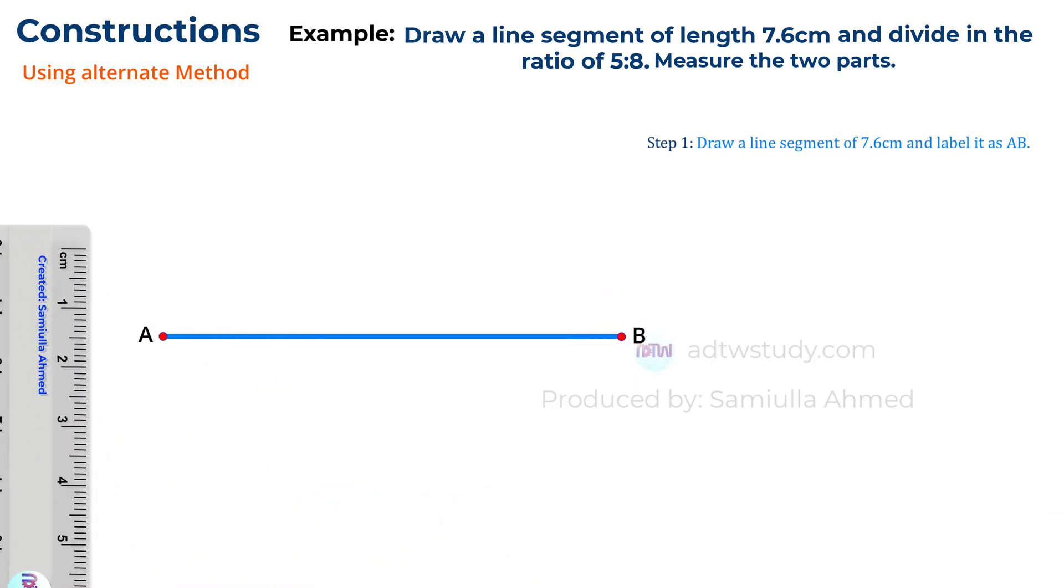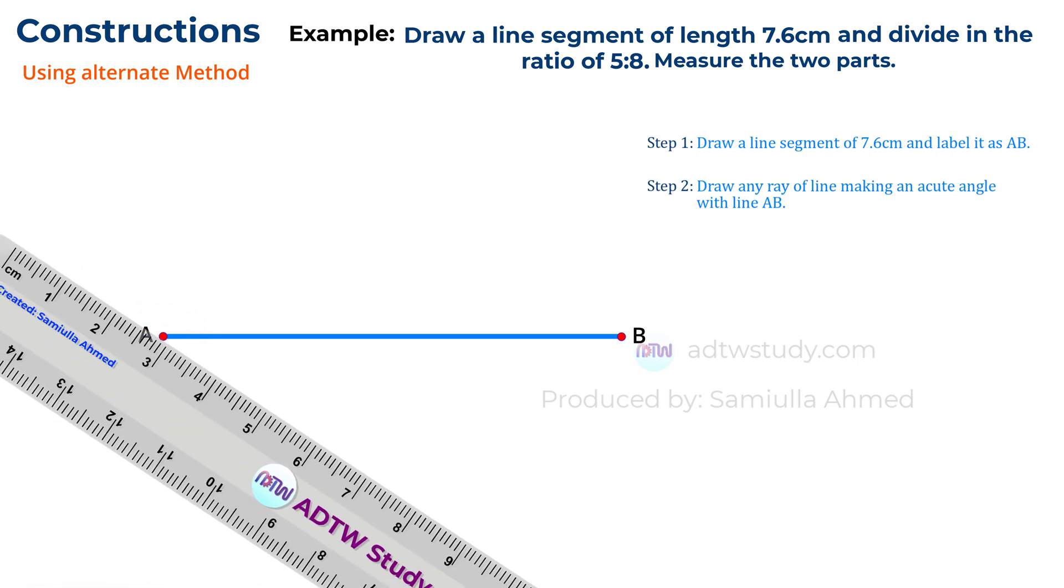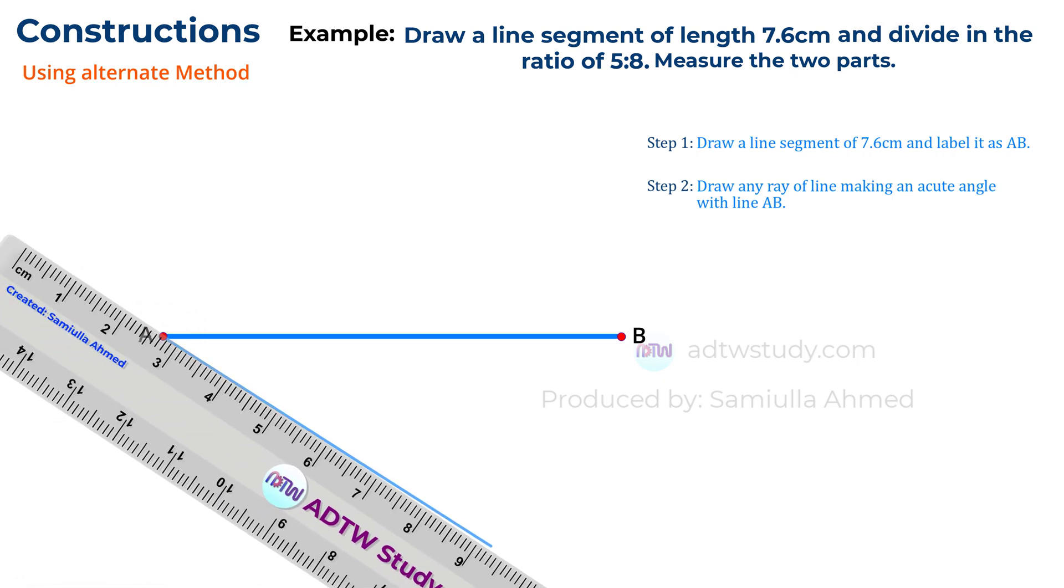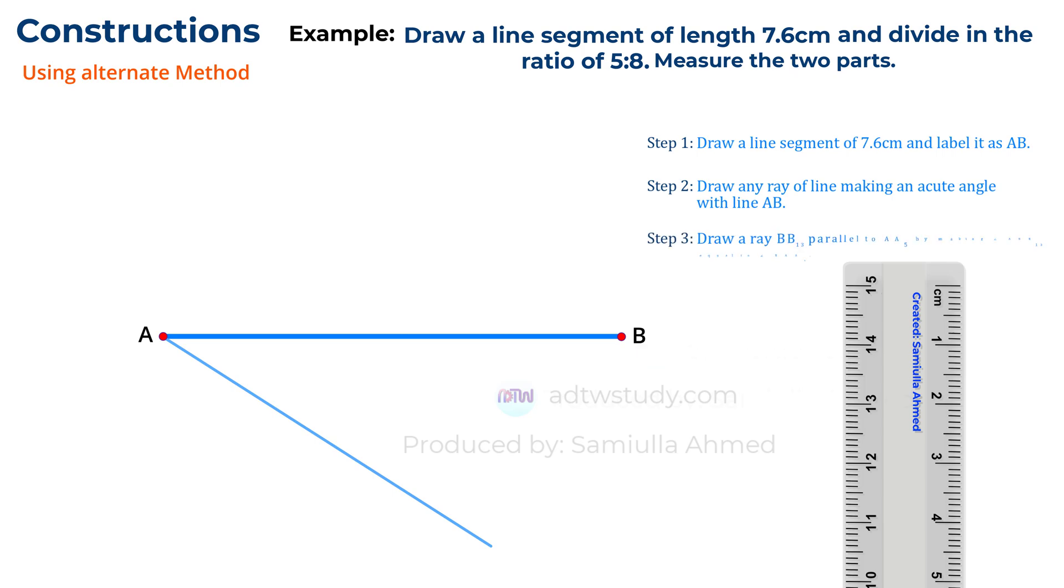In this method we need to draw two lines from the endpoints of the line AB such that both lines are inclined at the same angle but on opposite sides as shown. Let's begin. First, draw a line at an acute angle from point A.